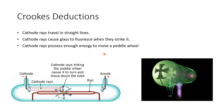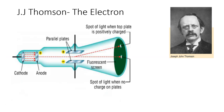After all his work, William Crookes deduced the following: cathode rays travel in straight lines, as shown by the very sharp shadow cast by the Maltese cross; cathode rays cause glass to fluoresce with a green color when they strike it; and cathode rays possess enough energy to move a paddle wheel — the cathode rays hit the paddle wheel, cause it to rotate, and move it down the rail.